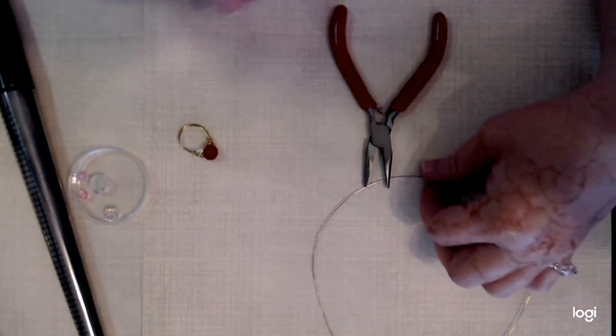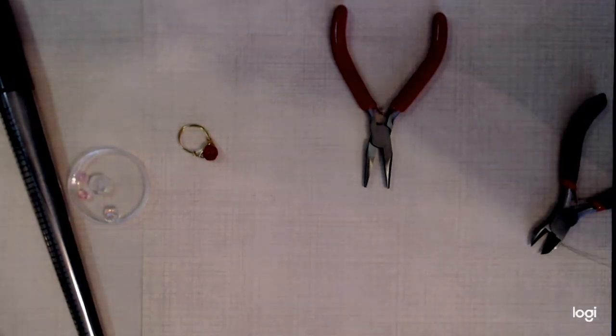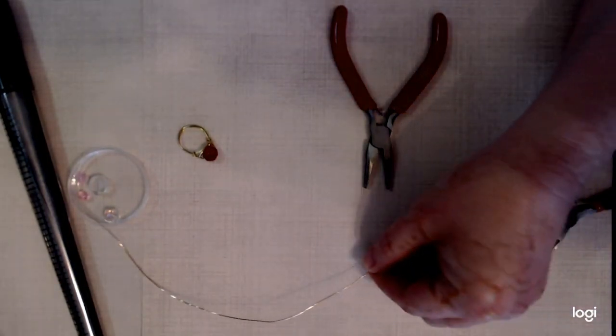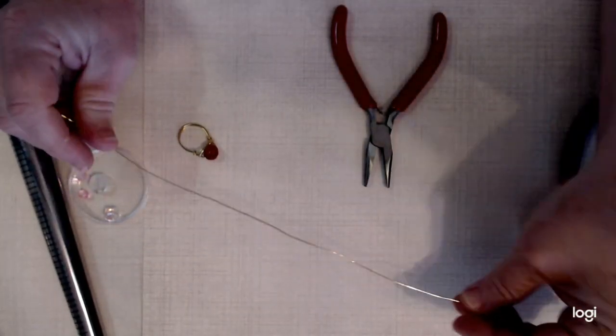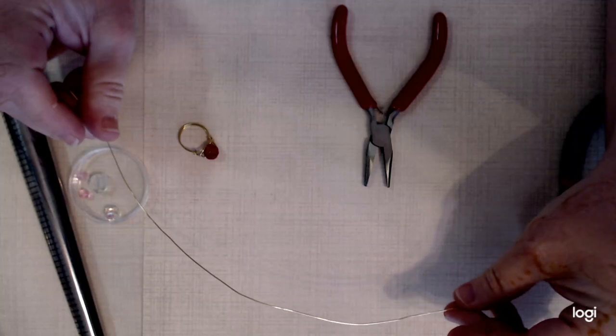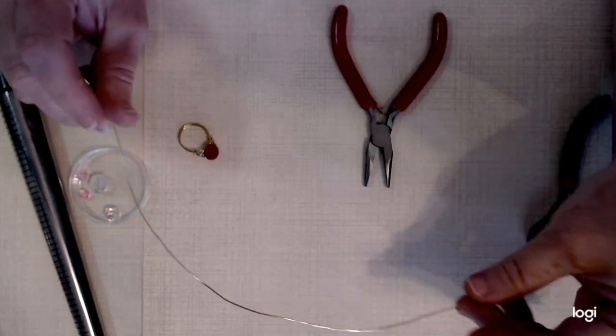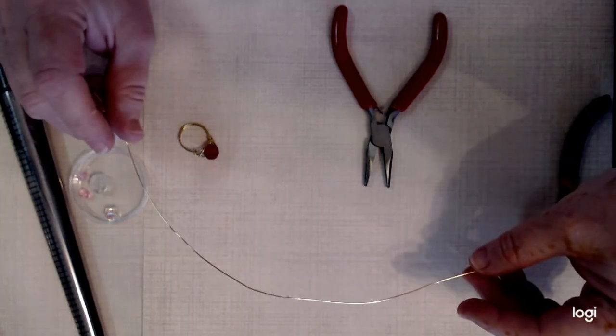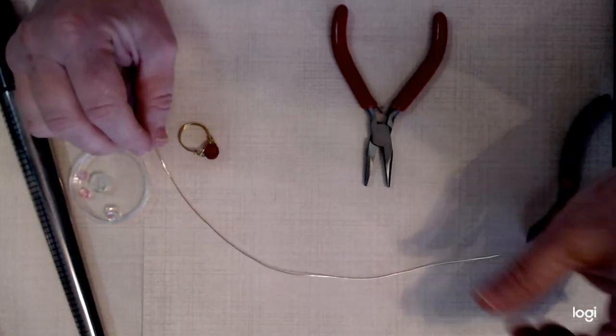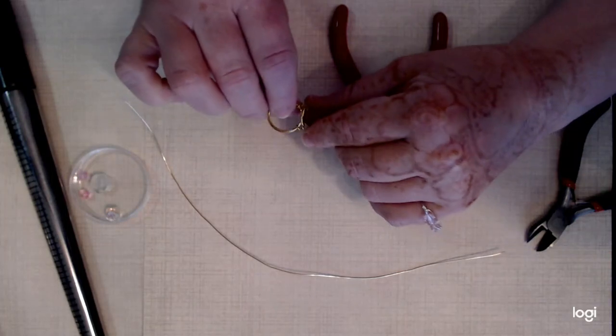You will need 12 inches of 22 gauge wire. The gauge of the wire is how many will fit in an inch, so the bigger the gauge, the smaller the wire. 22 is a nice size for this ring project.